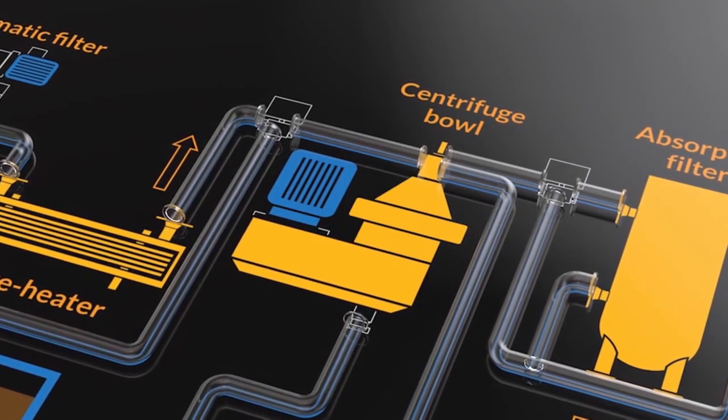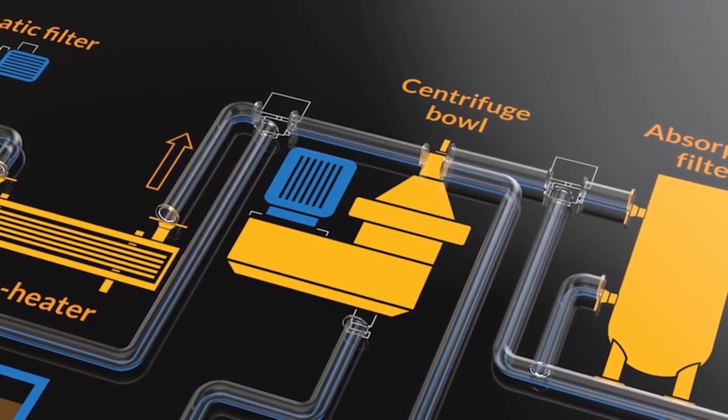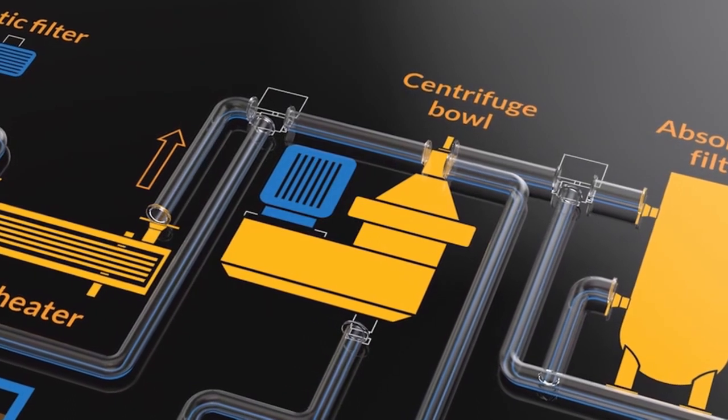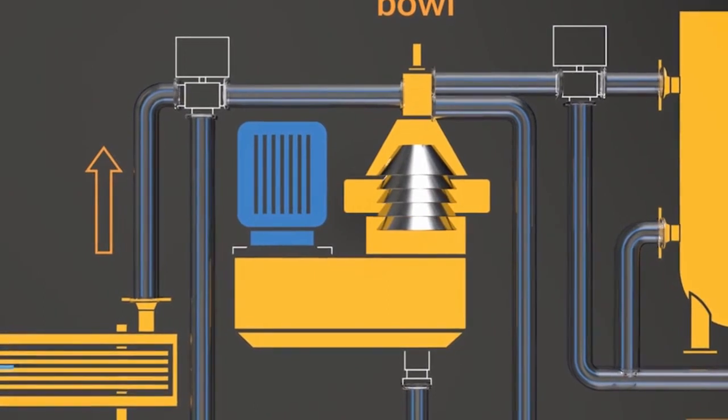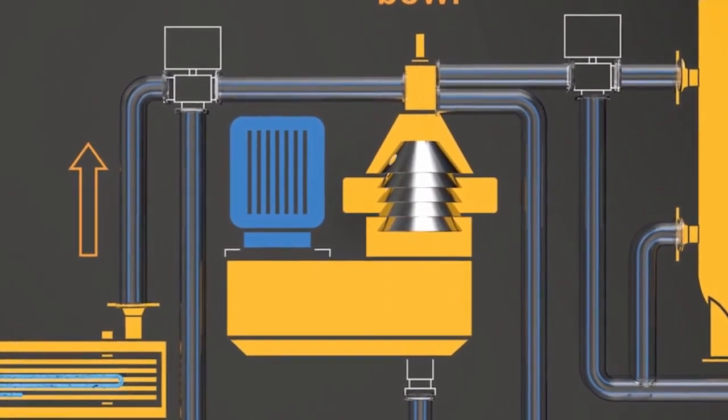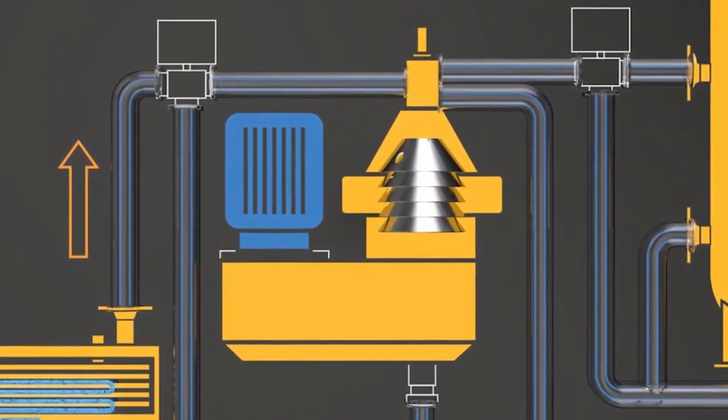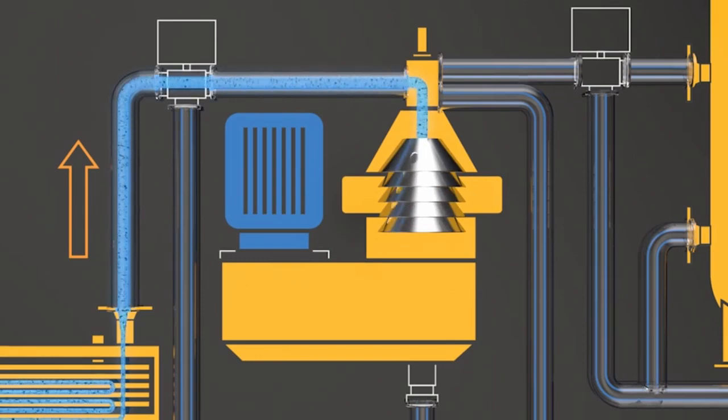Centrifuges for bilge water are very similar to the ones we are familiar with for purifying oils. A disk stack is placed inside the bowl to create a laminar flow and improve the separation effect.